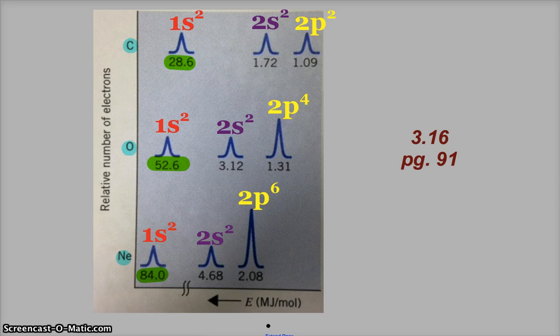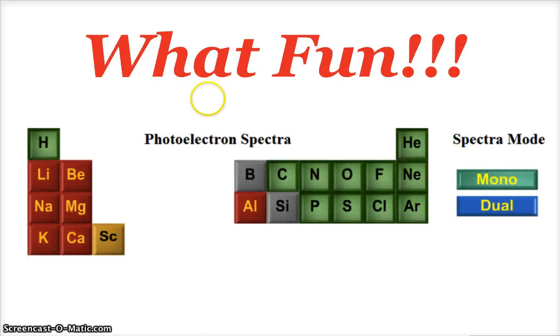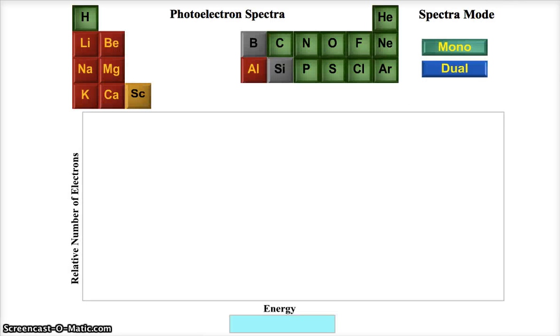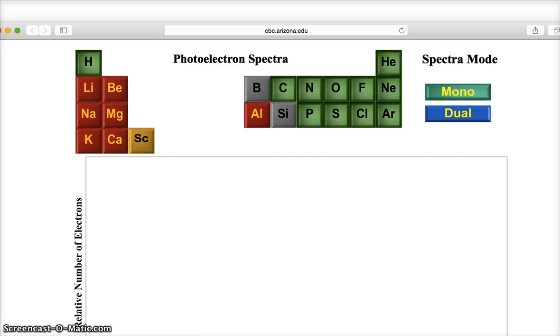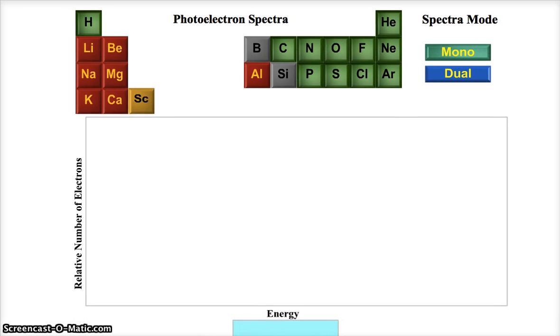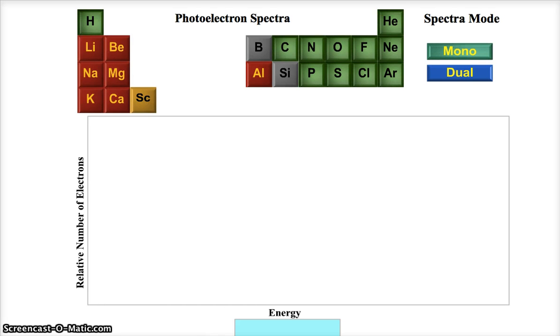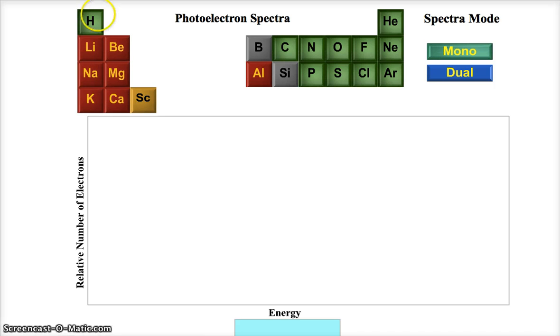Alright. If you want some more fun or to explore a few more of these photoelectron spectra, you can go to this lovely place. And I can bring this down. This is the website, cbc.arizona.edu. And so you can click on up through element 21 and see the different spectra. So there's hydrogen. And there we see the tiny little peak.